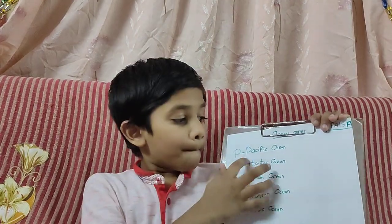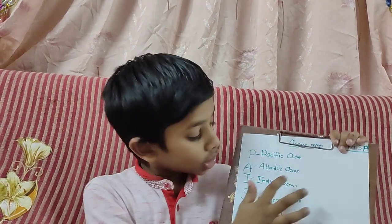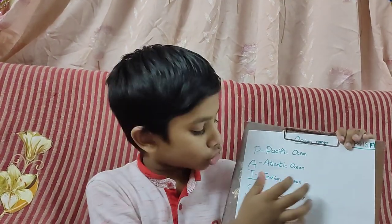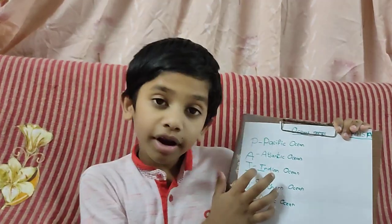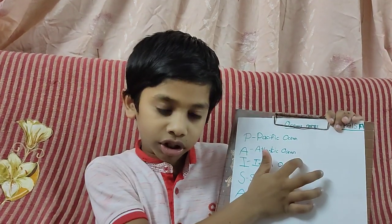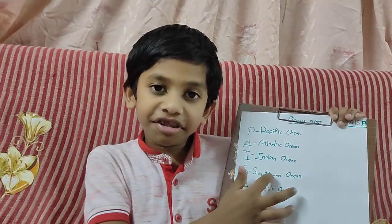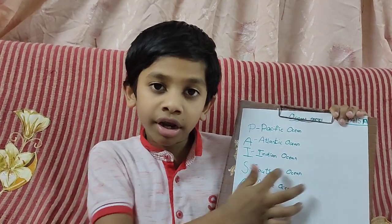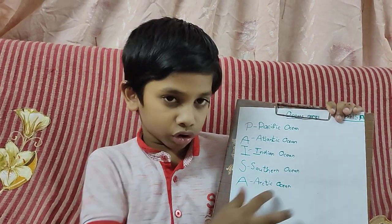So, P for Pacific Ocean, A for Atlantic Ocean, I for Indian Ocean, S for Southern Ocean, A for Arctic Ocean.